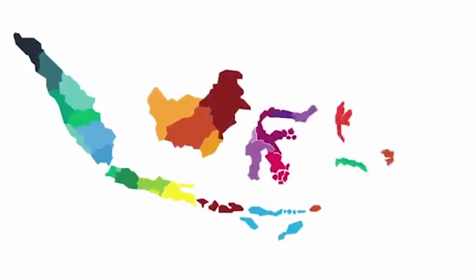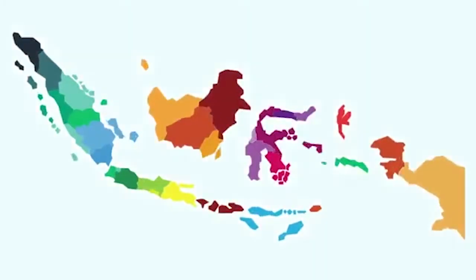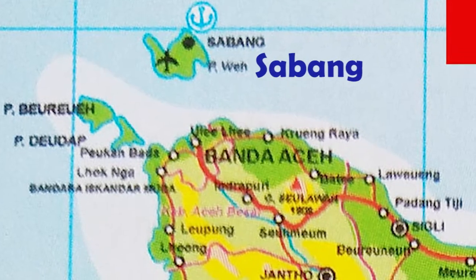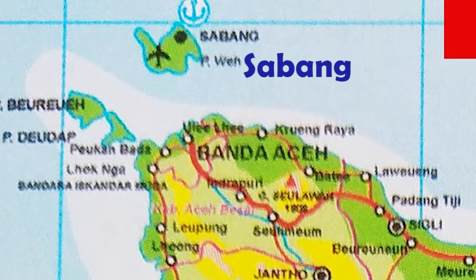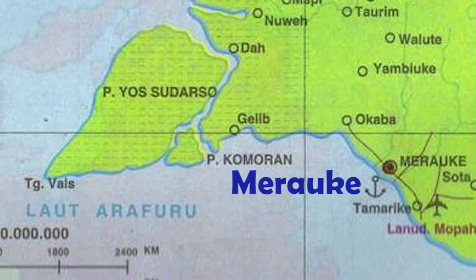Anak-anak, setelah mendengar lagu dari Sabang sampai Merauke tadi, kita dapat mempelajari tentang kondisi geografis negara Indonesia. Dari lagu itu dijelaskan, wilayah Indonesia berbentuk kepulauan yang tersebar dari Sabang sampai Merauke.